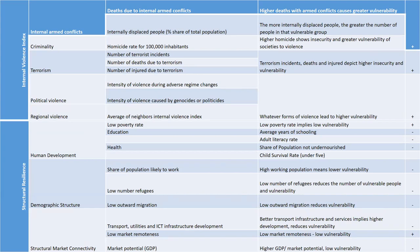Another dimension of the UVI is the internal violence index, looking at criminality, terrorism, political violence, and regional violence. If you have data — for example, number of terrorist incidents, deaths due to terrorism, or homicide rate per 100,000 inhabitants — you can measure that dimension and link it with vulnerability. A higher number of terrorist incidents or deaths means higher vulnerability, meaning the population is more insecure.